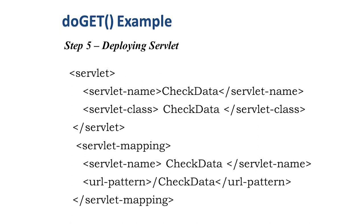In web.xml, write the servlet name as checkdata and the servlet class as checkdata. You can change the name as you like, but the servlet class must match the file we created. For servlet mapping, write the servlet name and set the URL pattern to /checkdata, through which we can open this file in the web browser.